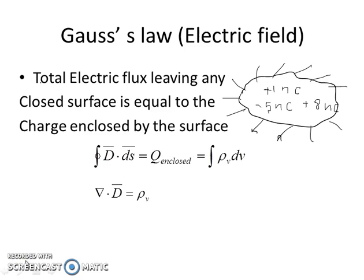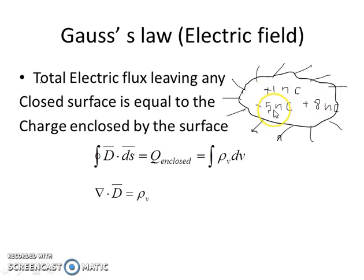Now we will see Maxwell's equations — what they mean and their significance — all four equations one by one. The first is Gauss's law for the electric field, which is a measure of how much charge exists at a point. The statement: total electric flux leaving any closed surface equals the charge enclosed by that surface. For example, a closed surface enclosing charges of +9 nC and −5 nC gives a total of +4 nC, so the total electric flux leaving that surface equals +4 nC. These equations are the integral form and the point form of Gauss's law.